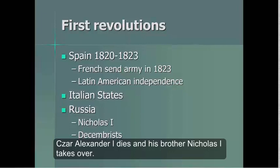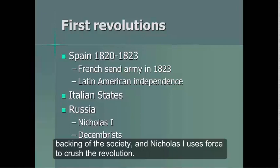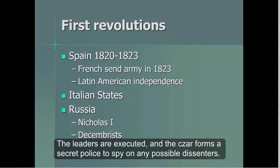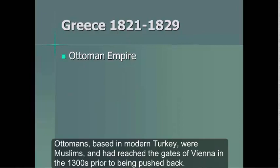In Russia, Tsar Alexander I died and his brother Nicholas I took over. A group of junior officers called the Decembrists did not like the aristocracy in Russia and attempted a revolution. They did not have the full backing of society, and Nicholas I used his force to crush the revolution. The leaders were executed and the Tsar formed a secret police to spy on any possible dissenters.